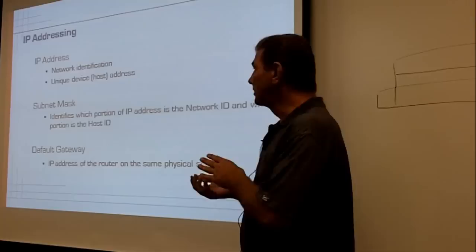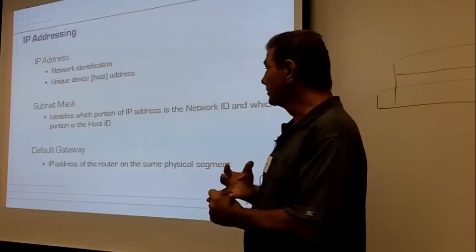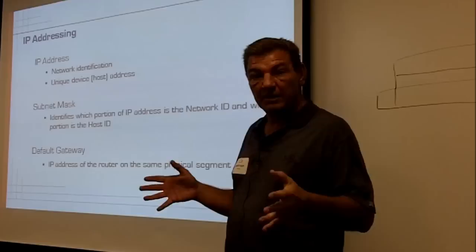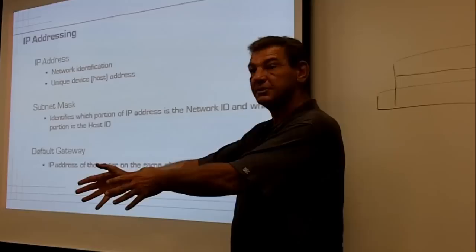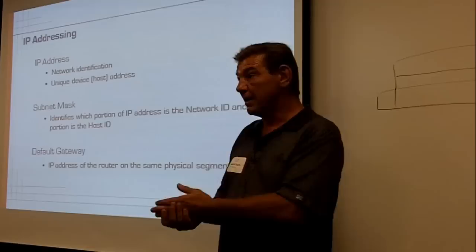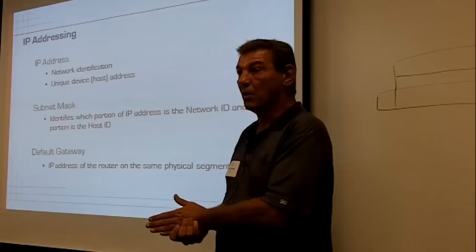So what is an IP address? The two parts are network identification and the unique address, so every device has to have its own IP address. In Windows, if you assign an IP address and there's another device already on your network with the same IP address, it'll come up and tell you. But with a PLC or a device, if you assign a duplicate IP address, it won't tell you.